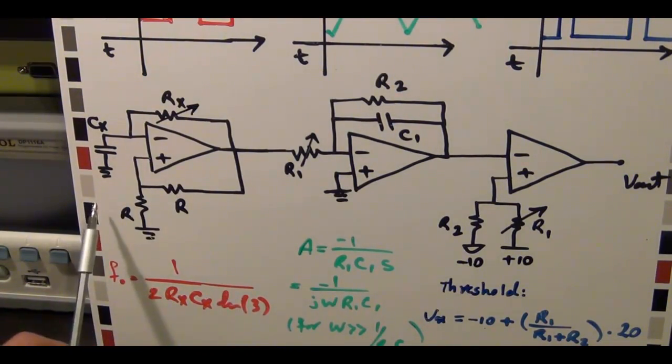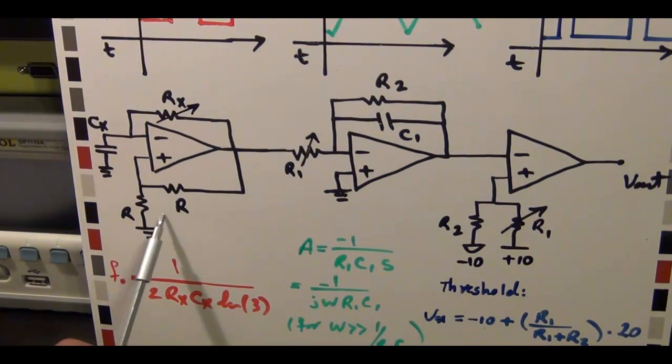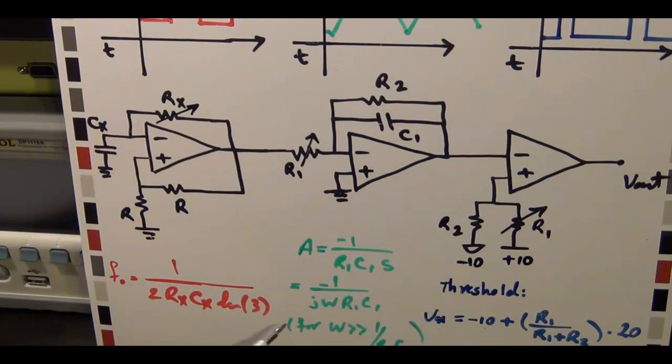And if I assume the R's are the same, the frequency of oscillation is 1 over 2 times Rx Cx ln of the value 3. And this 3 comes from the ratio, the fact that the resistor dividers are equal, so it's R equal to R, so it's just half the voltage.